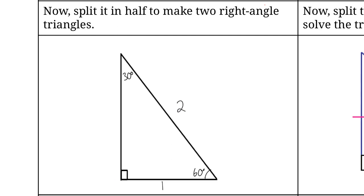Since it is a right angle triangle we can use the Pythagorean theorem to find that side length. So we would just have 2 squared equals 1 squared plus b squared. That would just be 4 equals 1 plus b squared. Bring that 1 over to the other side, so this is just 3 equals b squared. Taking the square root, b is just equal to the square root of 3 — we're going to keep it in exact form. So that means this side length is the square root of 3.